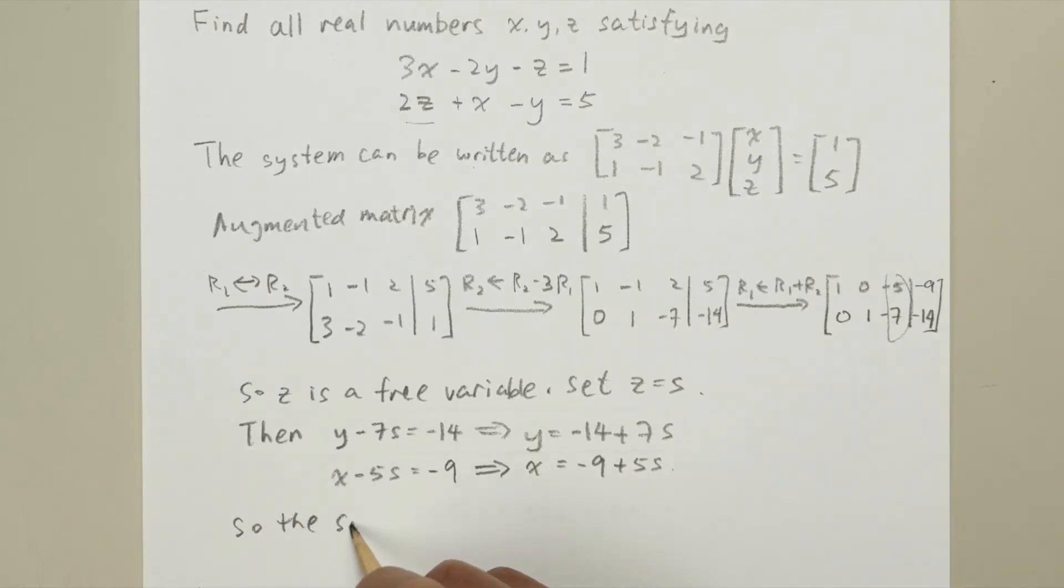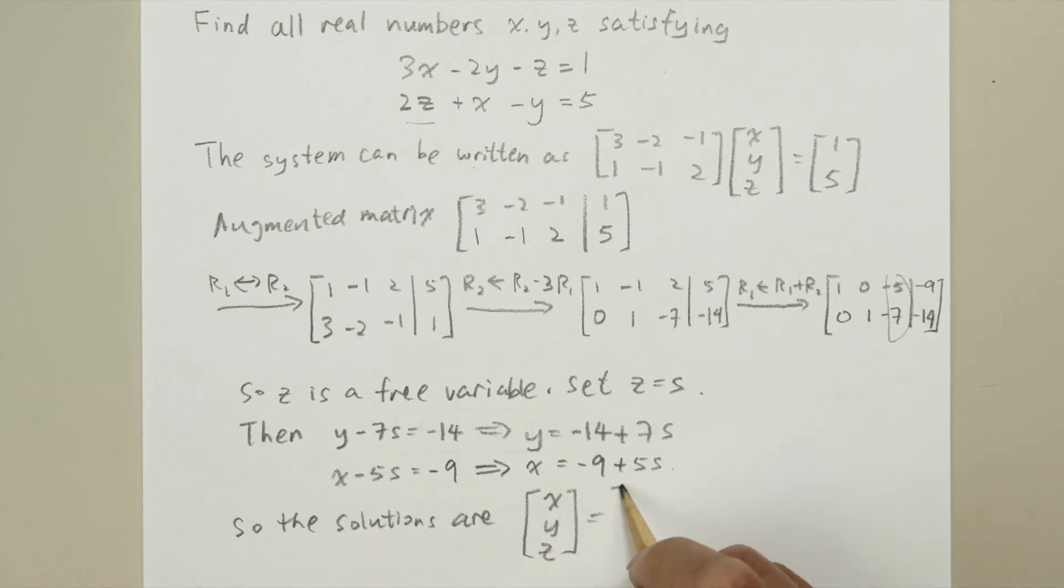And so all the solutions are going to be given by x, y, z equals minus 9 plus 5s, minus 14 plus 7s, s, where s is any real number.